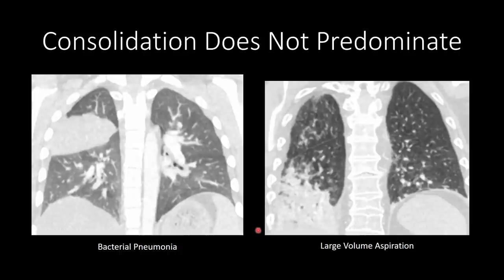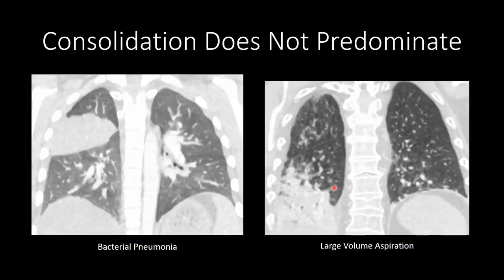In viral pneumonia or coronavirus-associated pneumonia, consolidation does not predominate. Here is a case of classic bacterial pneumonia in a segmental distribution — almost a lobar distribution — with consolidation being the predominant finding. We also have a case of a patient with dysphagia who presented after large volume aspiration in respiratory distress, where consolidation is the predominant pattern, which is not the pattern of organizing pneumonia.